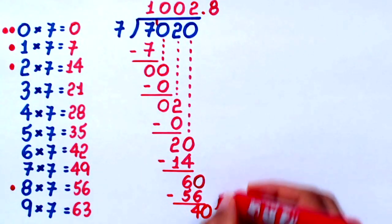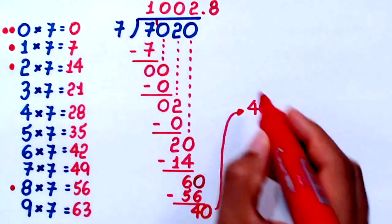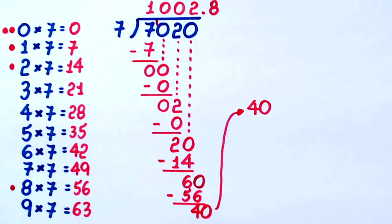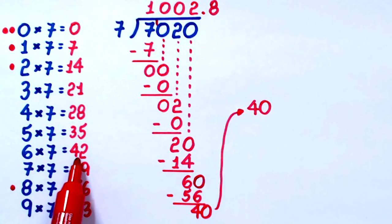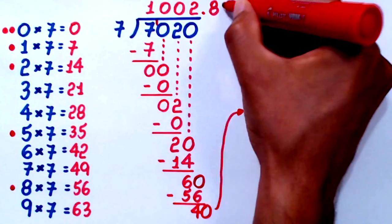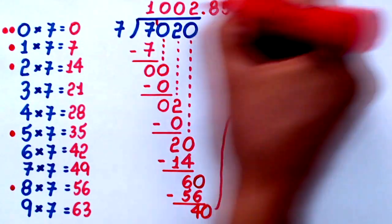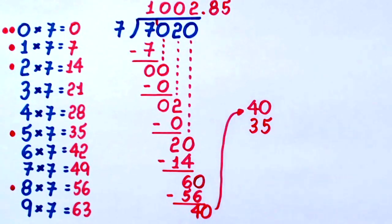Let me bring it up here so that we can continue. How many times does 7 go into 40 without going over? Notice that 6 times 7 equals 42, which is too much, so the number we were looking for is 5. I write 5 here. 5 times 7 equals 35 — that's what I write here. And then we subtract: 40 minus 35 equals 5.